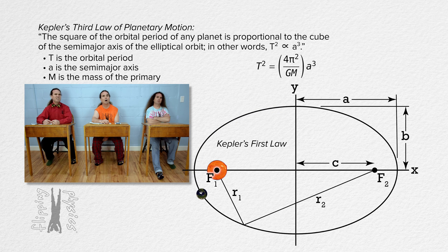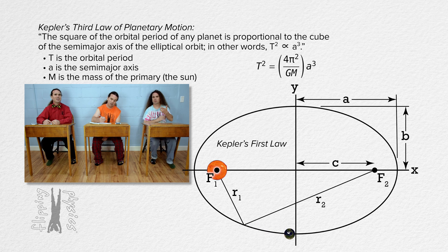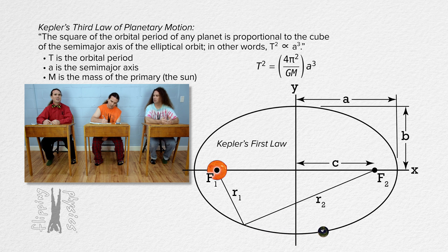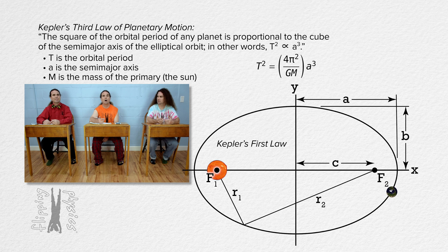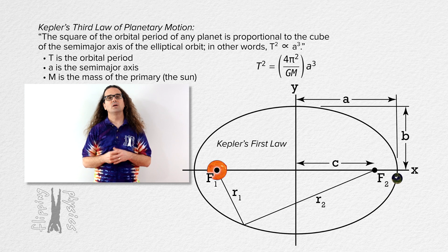Primary? What is the primary? The sun is the primary of the solar system. The primary is the object at one of the foci of the ellipses which each of the satellites trace when they orbit around the sun.